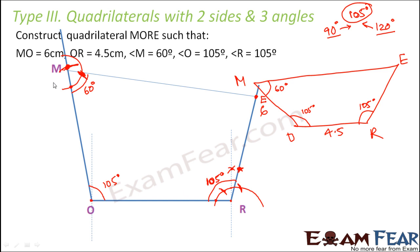When you know angles for any construction, the first thing to decide is which line to draw first. In a case with three angles and two sides, always prefer to draw the side for which you know both angles first. That prepares the base of your construction and helps you construct the quadrilateral correctly. This is how we construct a quadrilateral with two sides and three angles.